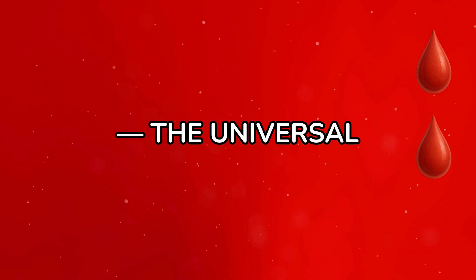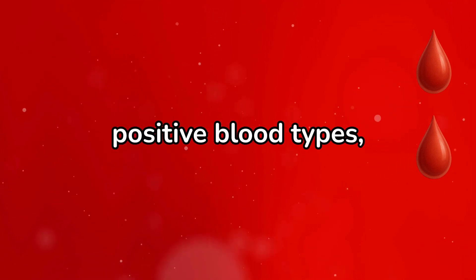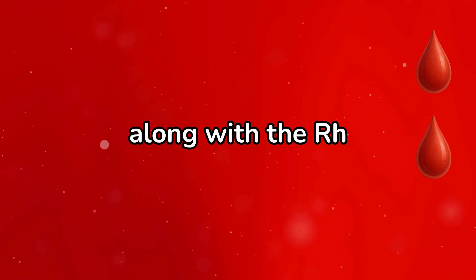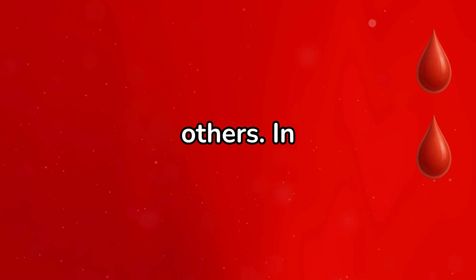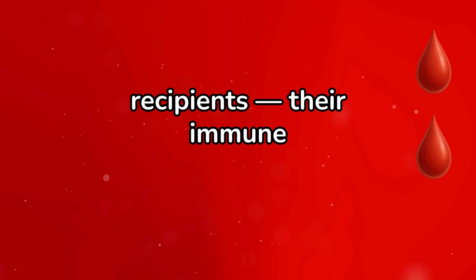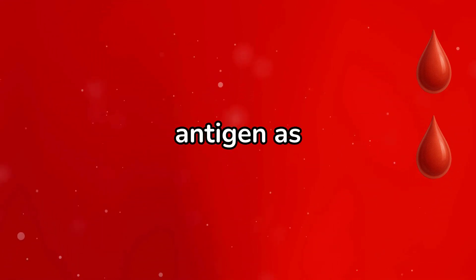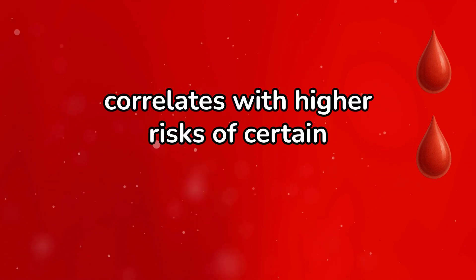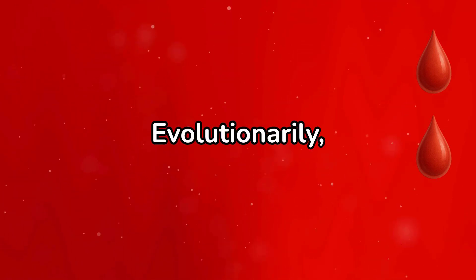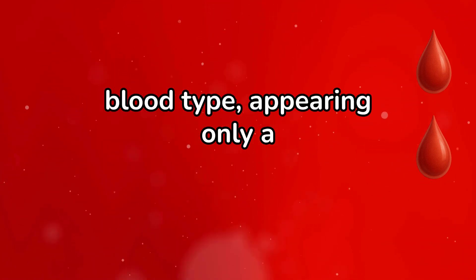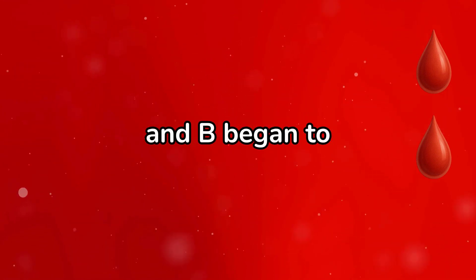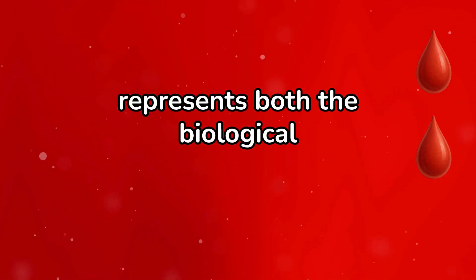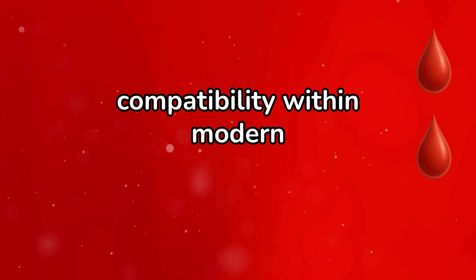AB positive, the universal recipient. AB positive is the rarest of the major positive blood types, found in fewer than 5% of people worldwide. Its red cells display both A and B antigens along with the RH factor, making it the only type that can safely receive blood from all others — AB positive patients are the universal recipients. Their immune systems recognize every other antigen as acceptable, but this inclusivity comes at a cost: the same dual antigen system linked to transfusion flexibility also correlates with higher risks of certain vascular and clotting disorders. Evolutionarily, AB is also the youngest blood type, appearing only a few thousand years ago when populations carrying A and B began to intermix. AB positive is therefore a genetic symbol of unity — a rare fusion of two ancient immune systems representing both the biological blending of early human lineages and the ultimate compatibility within modern medicine.